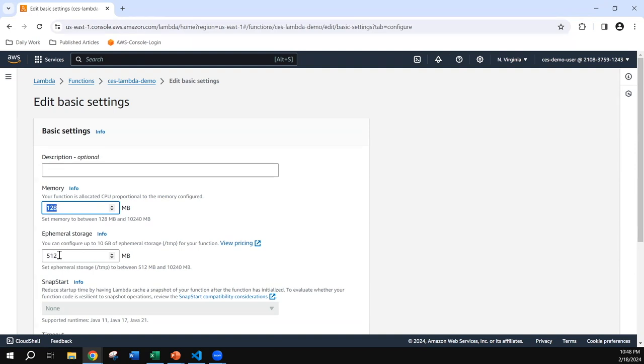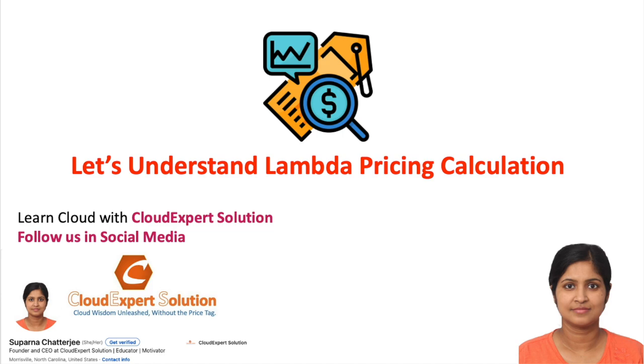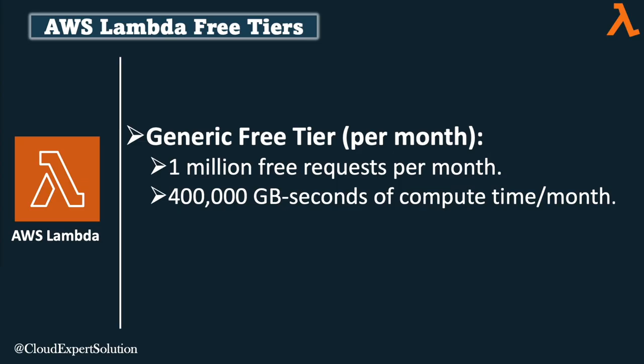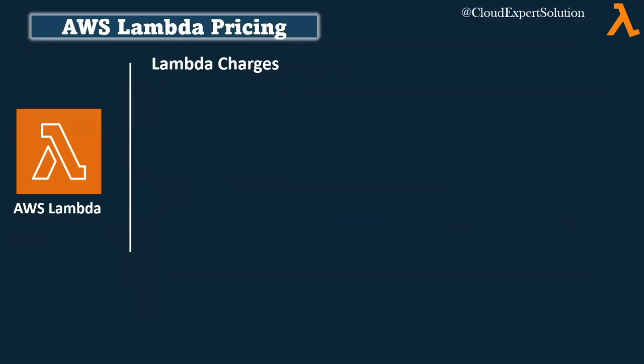In the next section we will explore how to calculate Lambda charges and what parameters AWS uses for pricing. AWS Lambda has a very generous free tier. Unlike other AWS services, Lambda free tiers are not just for the initial 12 months — all Lambda free tiers are applicable on a forever basis. In terms of invocations, AWS Lambda offers 1 million free invocations per month. In terms of compute time, AWS offers 400,000 GB-seconds free every month. Both free tier discounts are available for the rest of your AWS account's life.